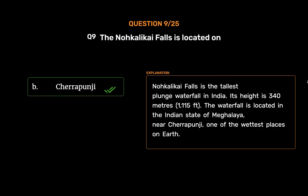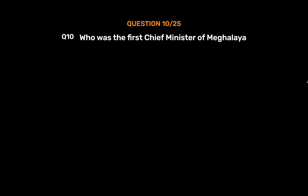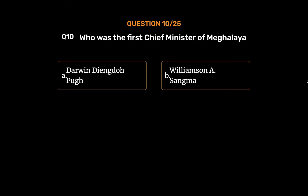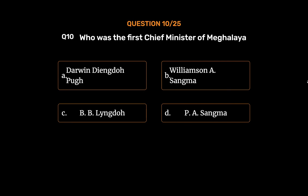Question number 10. Who was the first chief minister of Meghalaya? Option A: Darwin Diengdoh Poon. Option B: Williamson A. Sangma. Option C: B.B. Lyngdoh. Option D: P.A. Sangma.